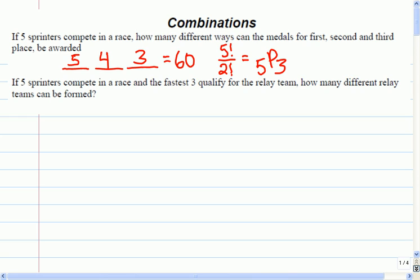If you take three objects out of the five, how many arrangements can you make? Okay, so now let's take a look at the second question, which says, five sprinters compete in a race, and the fastest three qualify to form a relay team. How many different relay teams can be formed? What's the difference between this question and the previous question? It's still the three people finishing, right? But what's the difference?